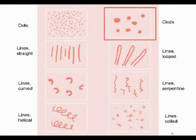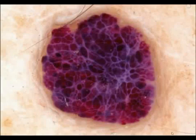What about clods? This is also a common vascular pattern. In angioma, for example, we have a pattern of clods.